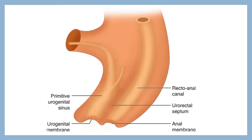The urorectal septum grows deeper and ends at the cloacal membrane. It forms anteriorly the urogenital membrane and posteriorly the anal membrane. The point where the urorectal septum ends at the cloacal membrane becomes the future perineal body.